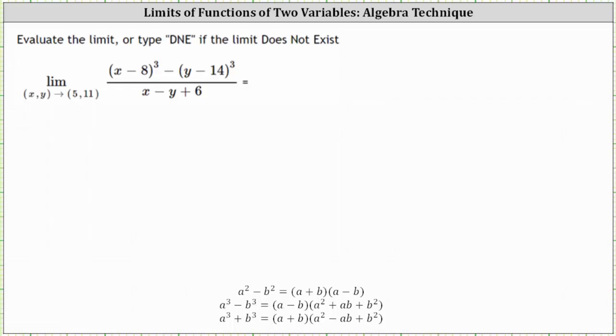We're asked to evaluate the limit if possible. We have the limit of the given function as (x, y) approaches (5, 11). Notice at the point (5, 11), the denominator is 5 minus 11 plus 6, which is zero, and therefore the function has discontinuity at the point we are approaching. But remember, this does not mean the limit does not exist.